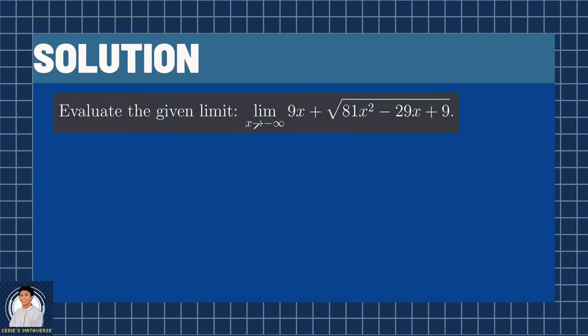To solve this problem, we need to do a substitution. We have the substitution y equals negative x. From here, the limit will be changed into the limit as y approaches the negative of negative infinity, which is positive infinity.